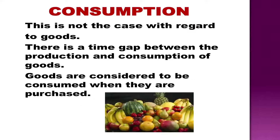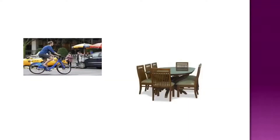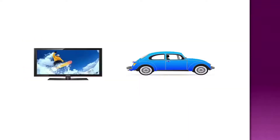This is not the case with regard to goods. There is a time gap between the production and consumption of goods. Goods are considered to be consumed when they are purchased. However, certain durable goods like furniture, cycles, cars, etc. continue to provide services for many years. Yet, they are considered to be consumed as soon as they are purchased.